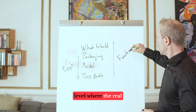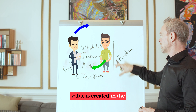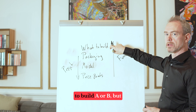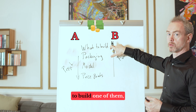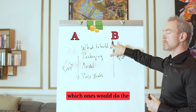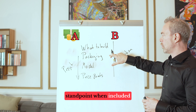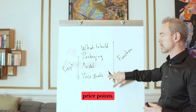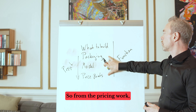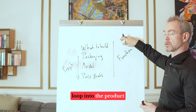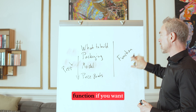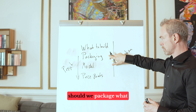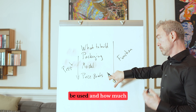If you want to run a pricing function where you do this continuously in your organization, this is the function level. The real value is created in the feedback loop with customers. Then you start to say: if I have two features to build — A or B — but only have the resources to build one of them, which one does best from a commercial standpoint when included in the packaging, run through the pricing model, and actually monetized through the price points?